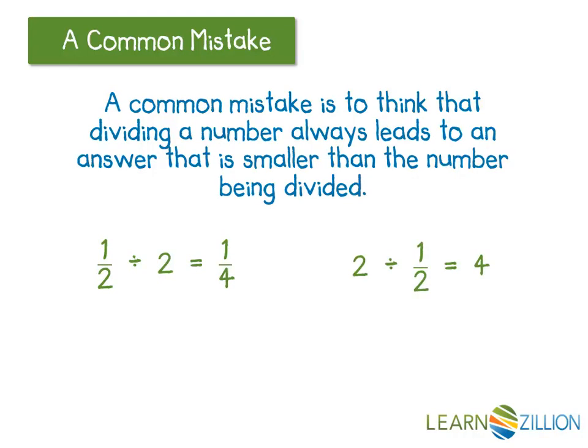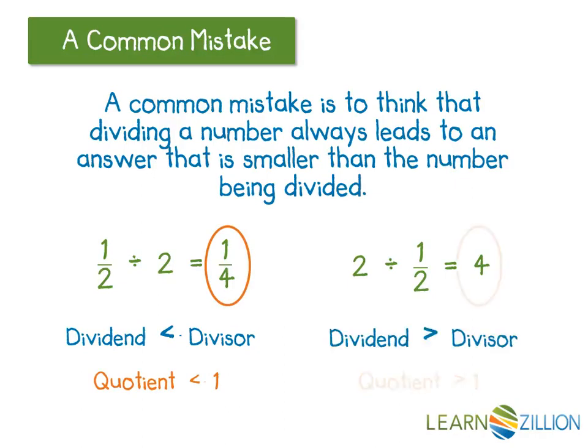One way that you can estimate to see if your answer is reasonable is remember that if your dividend is less than your divisor, then your quotient will be less than 1. If your dividend is greater than your divisor, your quotient will be greater than 1.